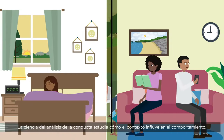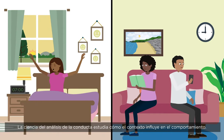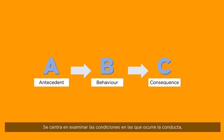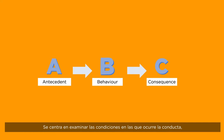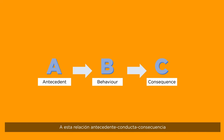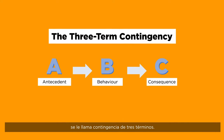The science of behaviour analysis studies how behaviour is influenced by its context. The focus is on examining conditions in which behaviour occurs, including events that precede it — antecedents — and events that follow it — consequences. This antecedent-behaviour-consequence relationship is called the three term contingency.